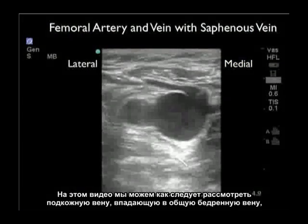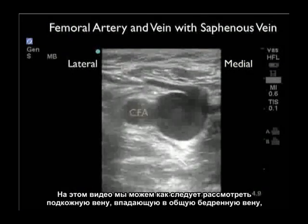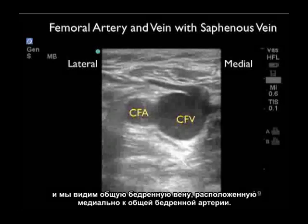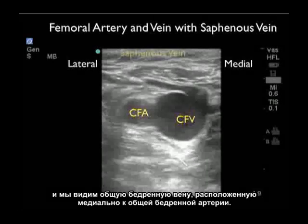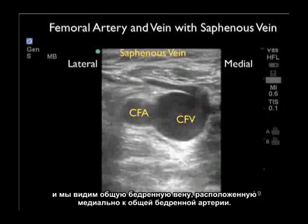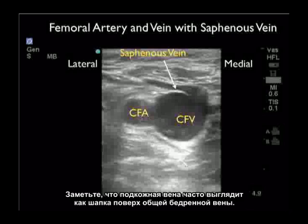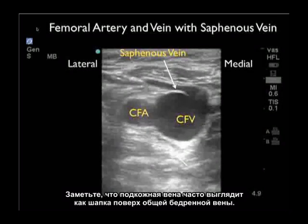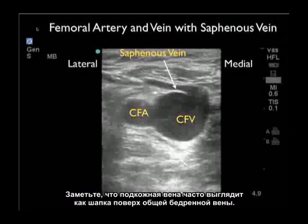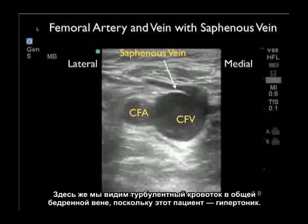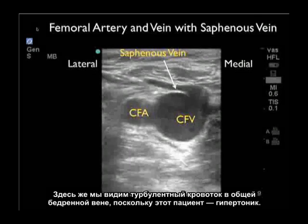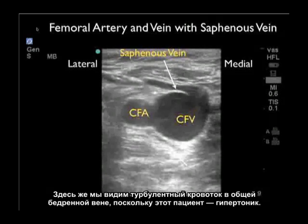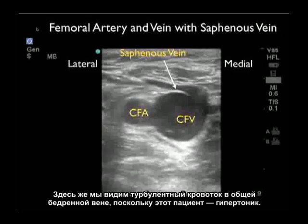In this video clip we get a good look at the saphenous vein joining into the common femoral vein, with the common femoral vein located medial to the common femoral artery. The saphenous vein has the appearance of a little hat on top of the common femoral vein. We also note turbulent flow of blood within the common femoral vein, as this was taken in a hypotensive patient.